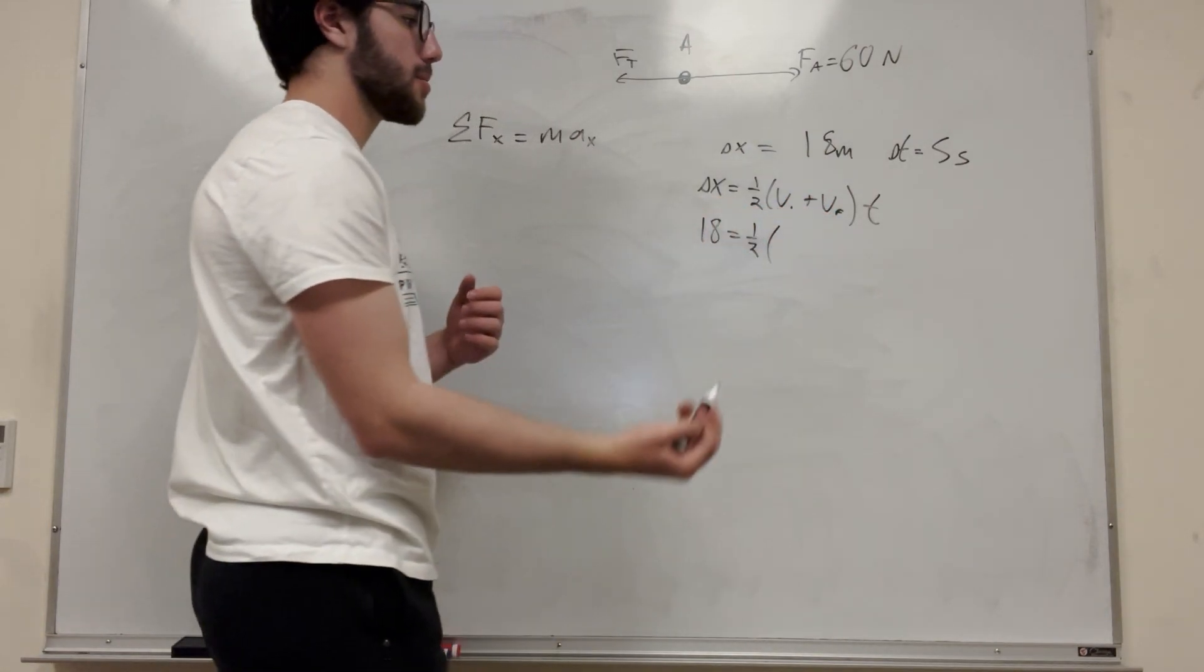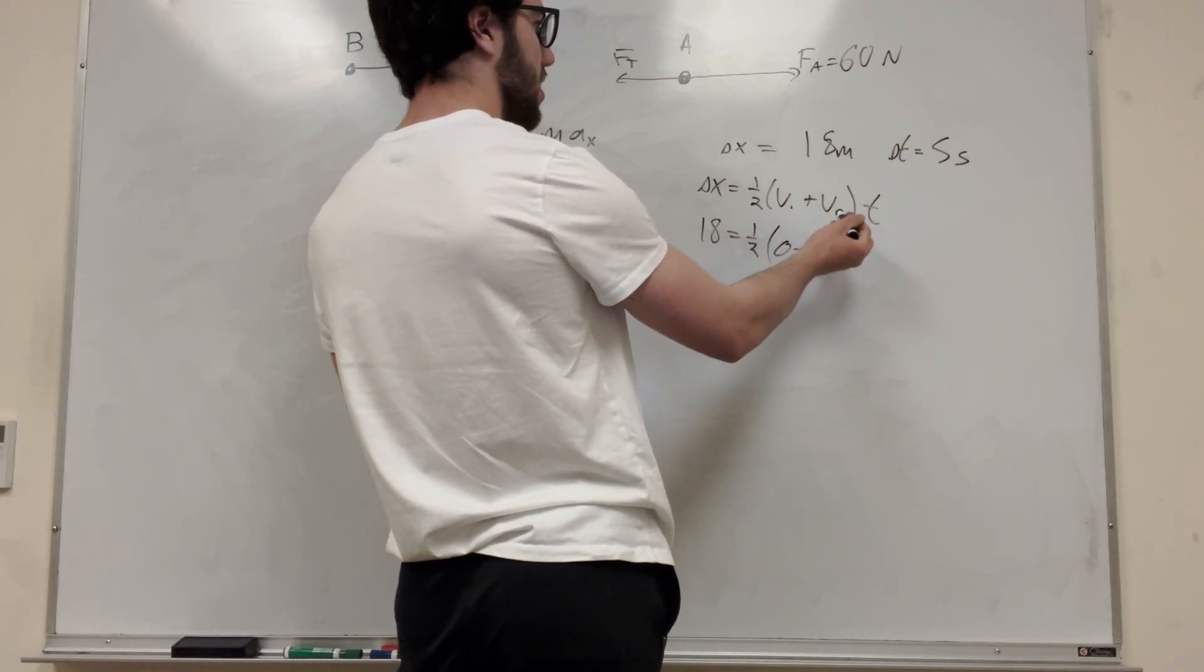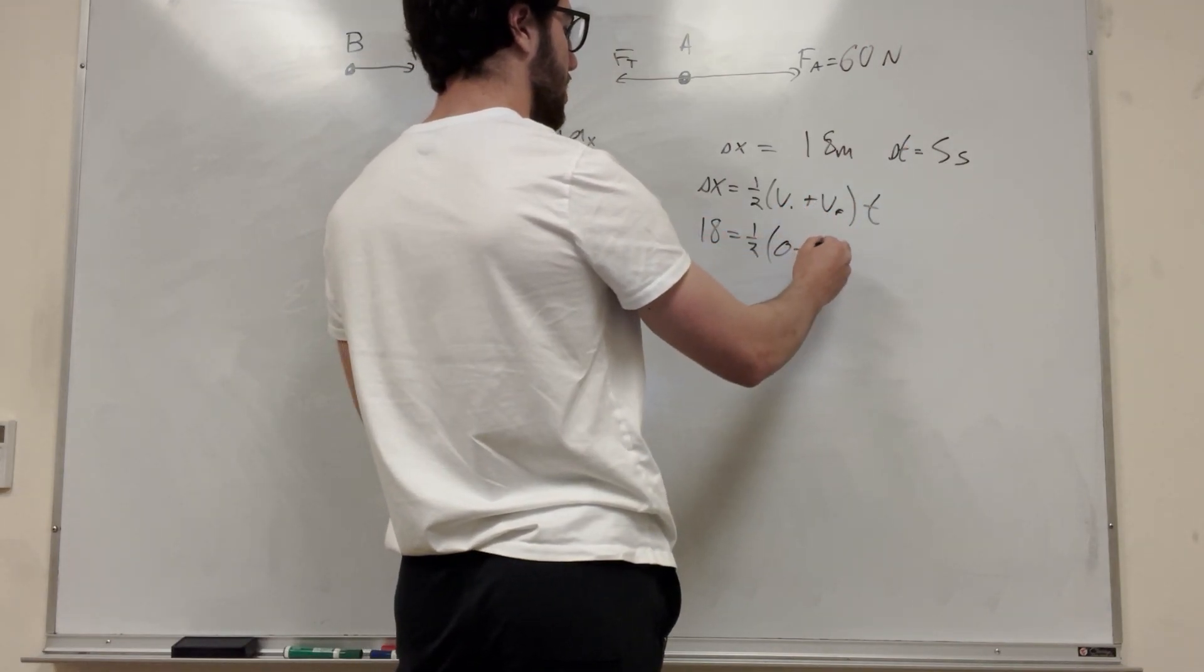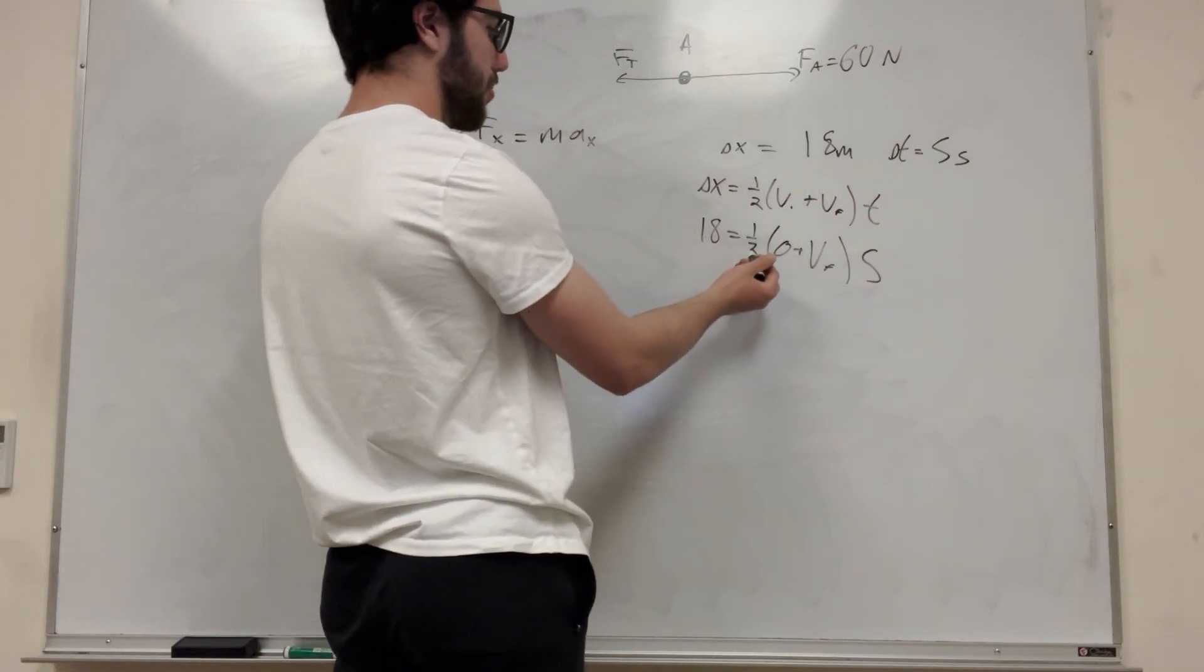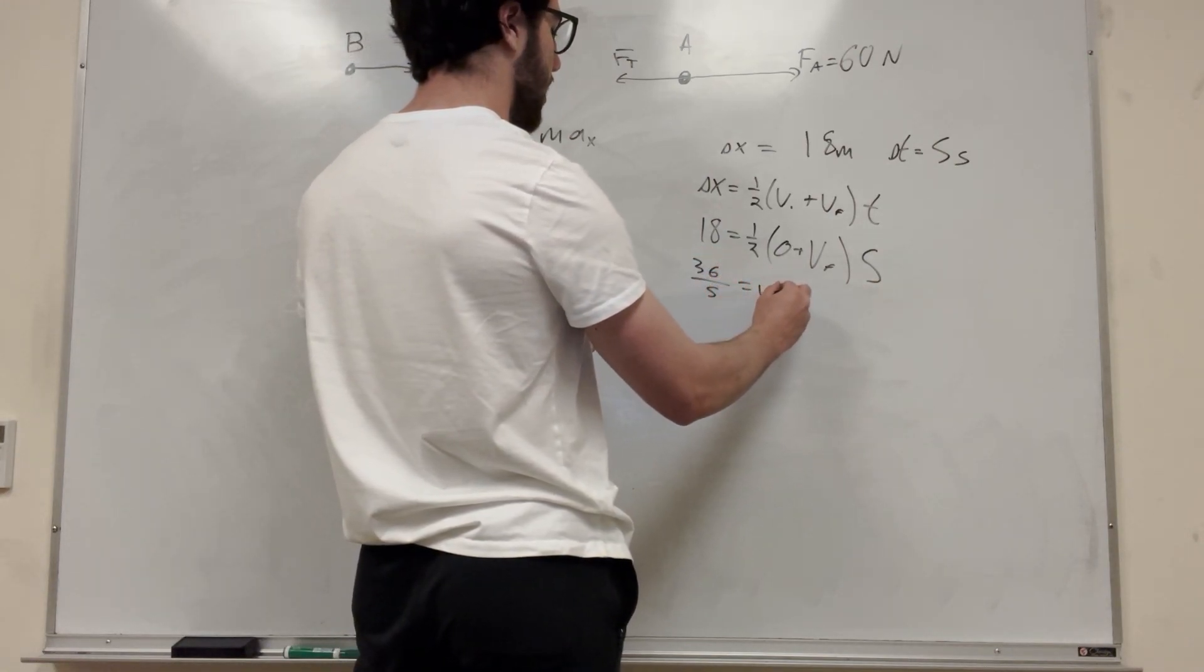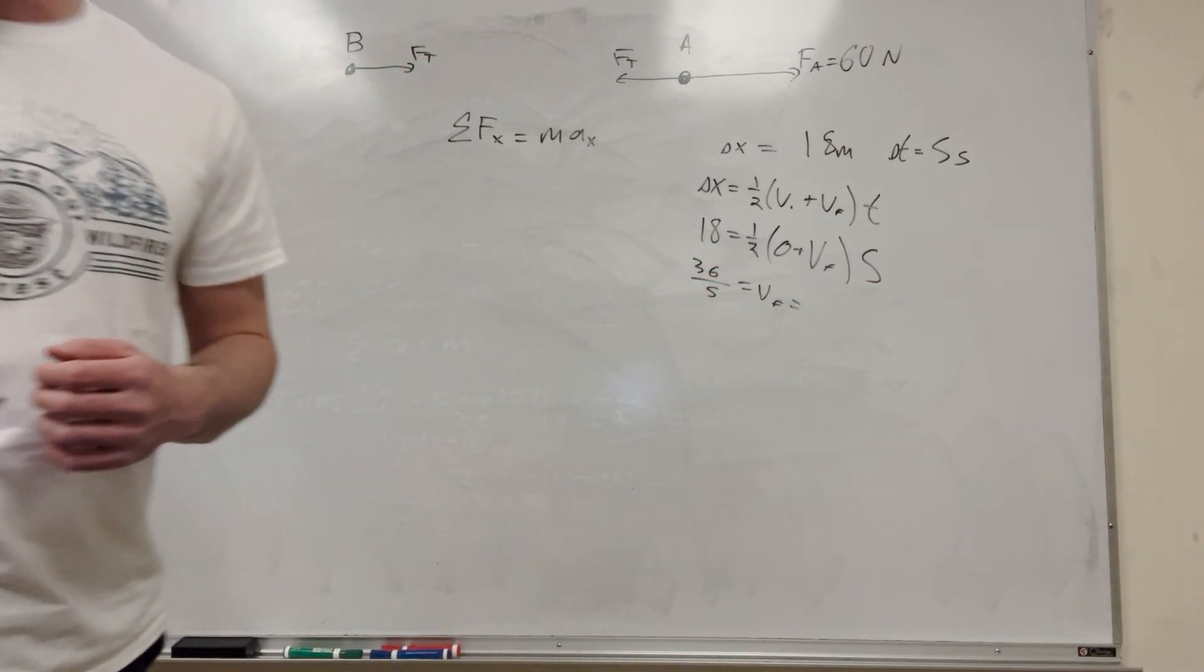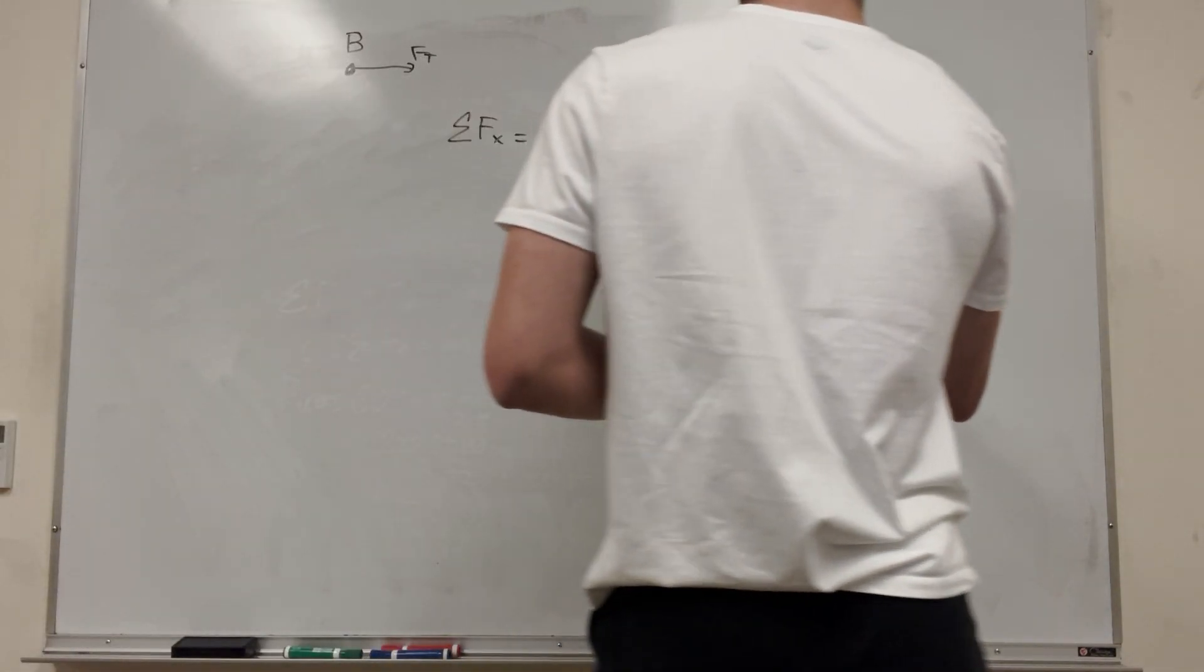So what do we have? So change in x, we said it's 18, is equal to 1 half. Velocity initial, we're starting from rest, so this is 0. So 0 plus velocity final is what we're trying to find, and then times 5 seconds. So of course we're going to multiply this by 2 to get 36 and divided by 5 to get velocity final. And this number in a more readable form is 7.2 meters a second.